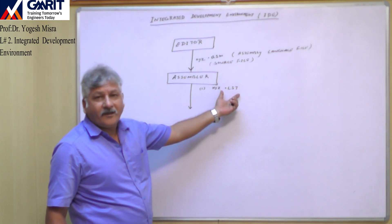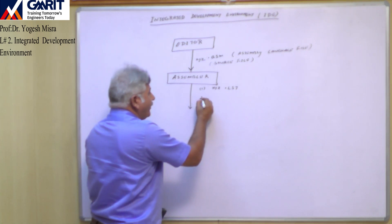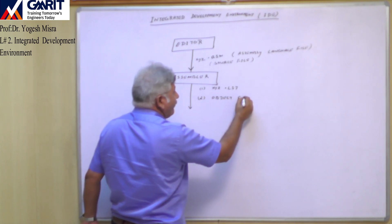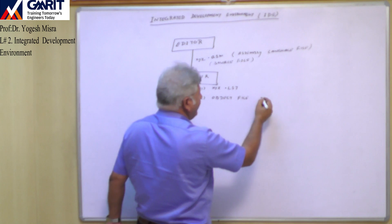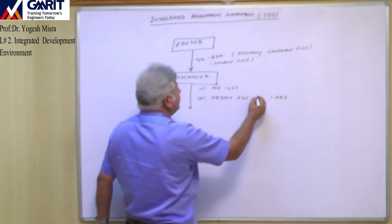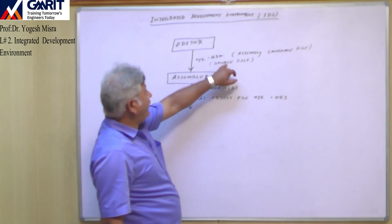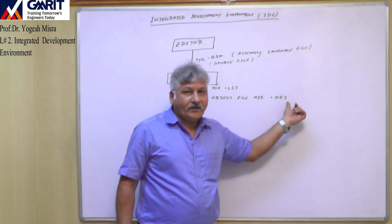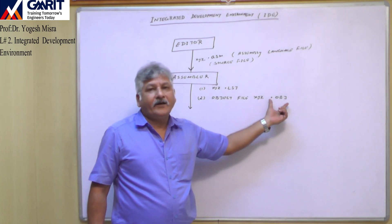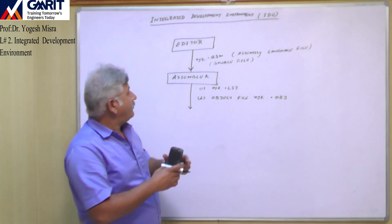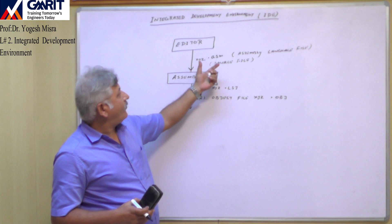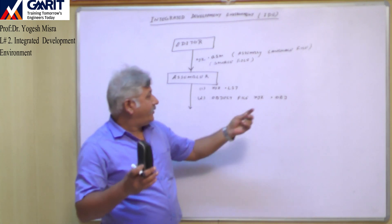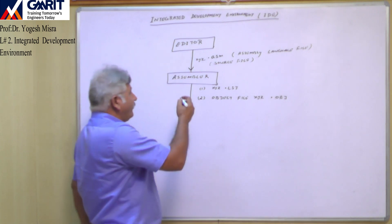A developer can use this list file for documentation purposes. The second file generated by the assembler is the object file with the extension .obj. So for example, xyz.asm produces xyz.list and xyz.obj. The object file is essentially a binary file — the mnemonics are converted into binary form and stored in the object file.